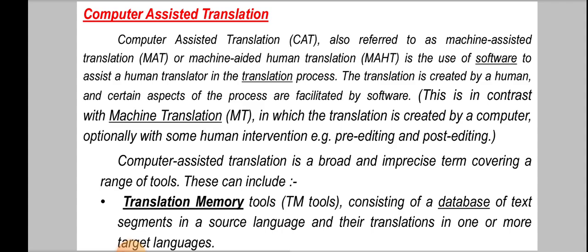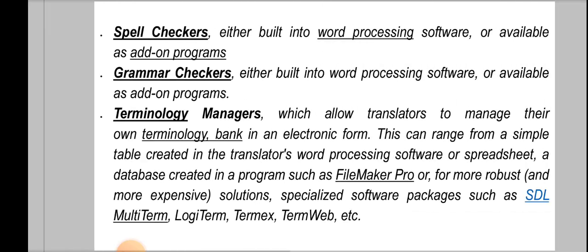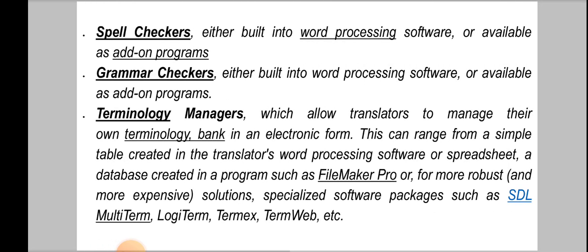These tools can include translation memory tools, also called TM tools. These consist of a database of text segments in a source language and their translations in one or more target languages. Next are spell checkers, then grammar checkers, and terminology managers. Terminology managers allow translators to manage their own terminology bank in an electronic form.